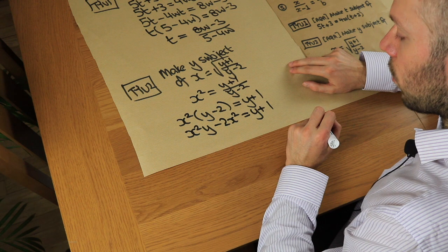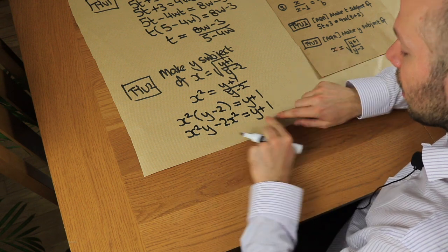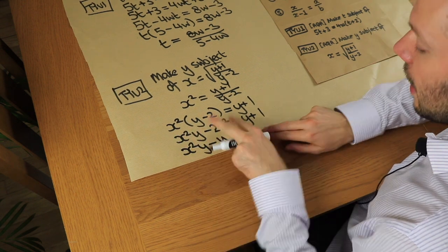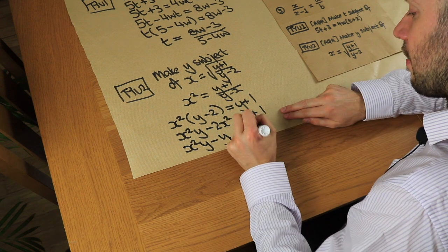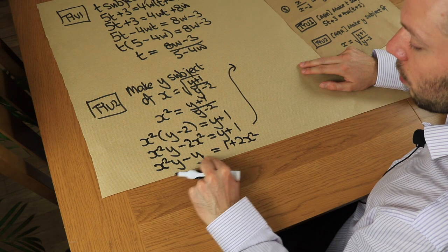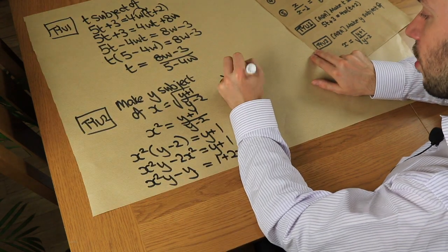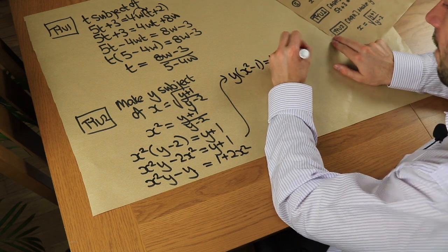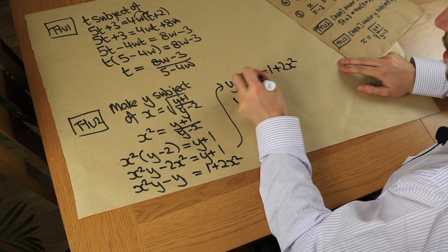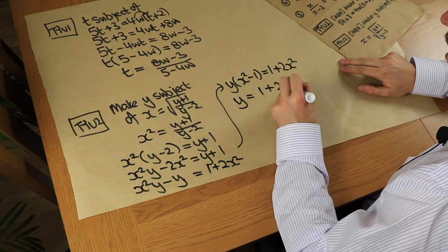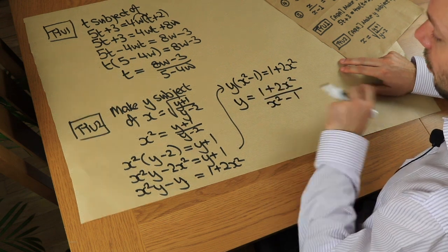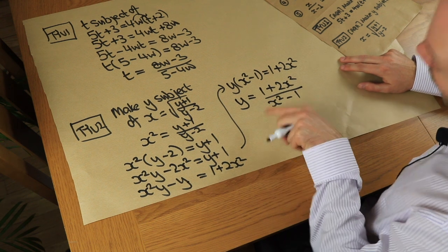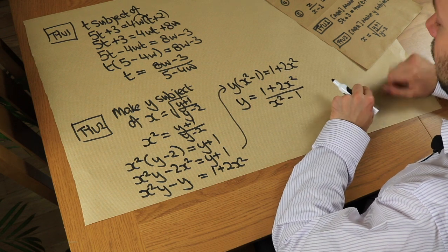Now isolate all y terms on the left: subtract y and add 2x² to both sides, giving x²y minus y equals 1 plus 2x². Factorize out y: y(x² minus 1) equals 1 plus 2x². Divide both sides by (x² minus 1) to get y equals (1 plus 2x²) over (x² minus 1). You may have got the equivalent form of minus(1 plus 2x²) over (1 minus x²), which is less tidy but technically correct. Well done if you got that right.